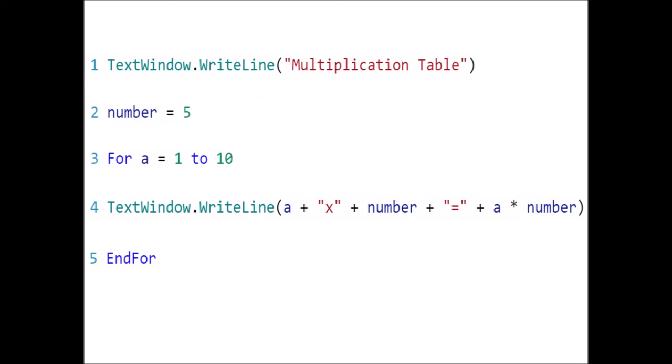These are the lines of code. Line 1 displays the text 'multiplication table'. In line 2, create a variable called number to store the value of 5.